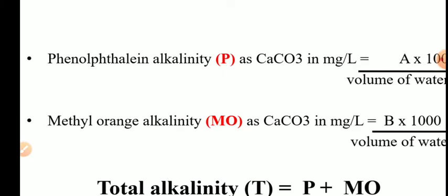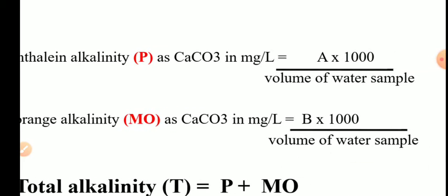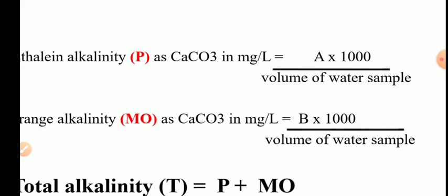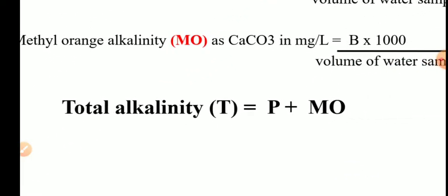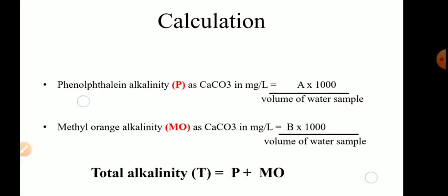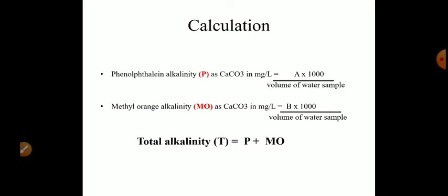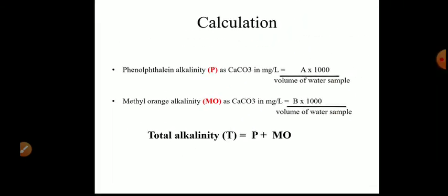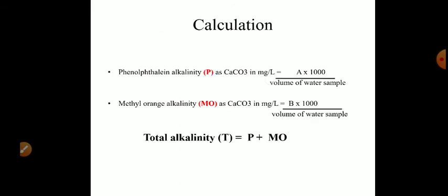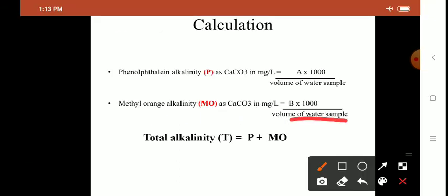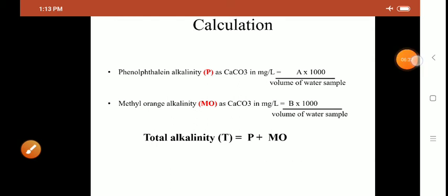For the calculation: phenolphthalein alkalinity P as CaCO₃ in mg per liter = A × 1000 divided by the volume of water sample taken. Methyl orange alkalinity MO = B × 1000 divided by the volume of water. Total alkalinity T = P + MO. That is how you determine and report the total alkalinity of any water sample.